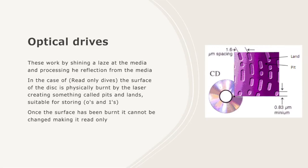Optical drives work by shining a laser at the media and processing the reflection from the media. In the case of read only drives, for example CDR and DVDR, the surface of the disc is physically burnt by the laser, creating something called pits and lands suitable for storing zeros and ones. Once the surface has been burnt it cannot be changed, making it read only.